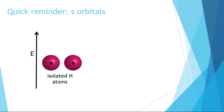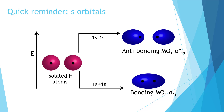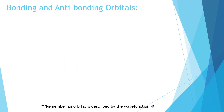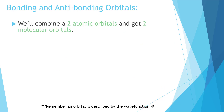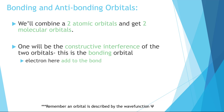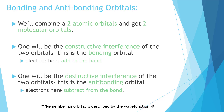Just like electrons from s orbitals can interfere constructively and destructively, so too can the electrons in the p orbitals, following a very similar pattern. We combine two orbitals to get two new orbitals — however many orbitals we start with is how many we end up with. One will be from the constructive interference of wave functions, and one from the destructive interference. These will be bonding and anti-bonding orbitals, respectively. Bonding orbitals will be lower in energy than the anti-bonding orbitals.